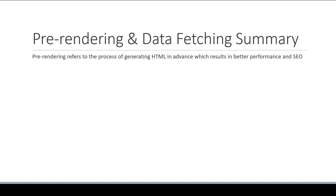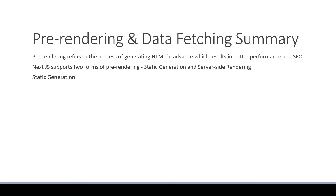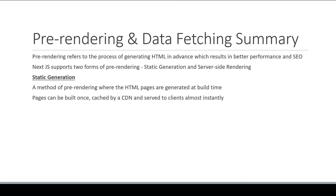We then learned that Next.js supports two forms of pre-rendering: static generation and server-side rendering. Static generation is a method of pre-rendering where the HTML pages are generated at build time. Pages can be built once, cached by a CDN, and served to clients almost instantly. It is the recommended method to pre-render pages whenever possible, as it is the more performant of the two forms. An example would be a marketing site or a blogging site.